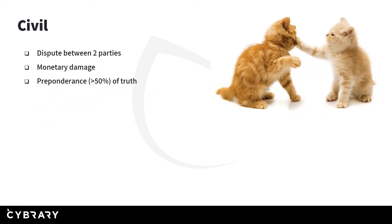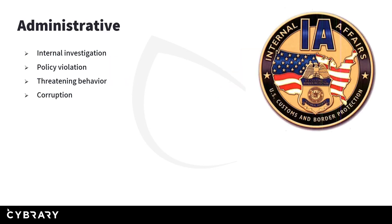Civil investigations are just a dispute between two parties, and differ from criminal in that they involve only monetary damages — someone sues somebody and gets a certain amount of money from the judge. The standard of proof is not beyond a reasonable doubt; you only need to prove the preponderance of truth, meaning a greater than 50% showing that you're telling the truth. The ruling can come from either a judge or jury in a civil case.